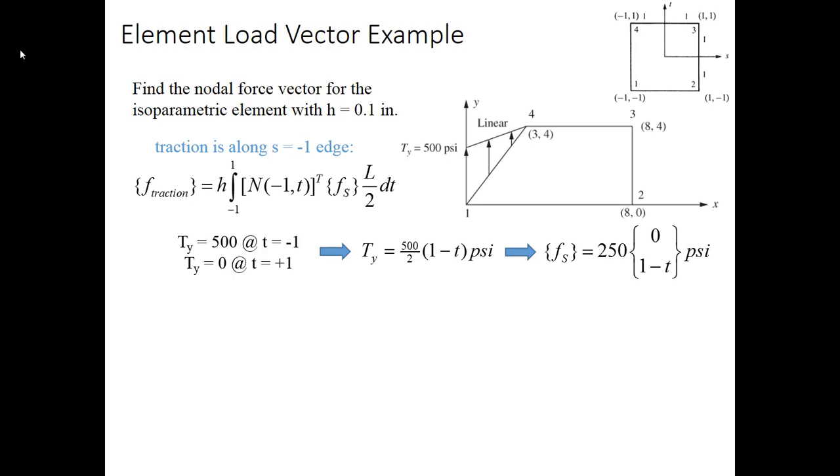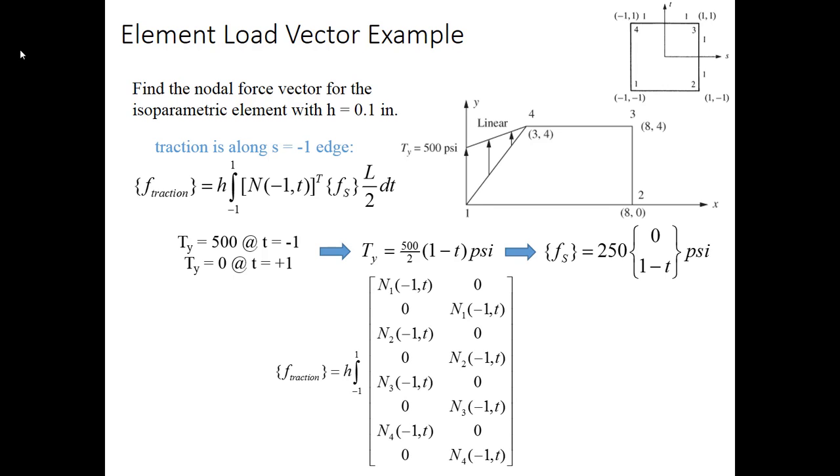This means that our force vector is equal to 500 divided by 2, or 250, times 0 and 1 minus t psi. In the x direction, we have 0, because as we look at this figure, we see there is no force acting horizontally. It's only in the y direction. Our integral now looks like h times the integral from minus 1 to 1, times the shape function matrix with the shape functions each evaluated at negative 1, t, times that fs vector. So, 250 times 0 and 1 minus t, and then, l over 2 times dt. We need to evaluate l in this case. It's just 5 inches for the length.